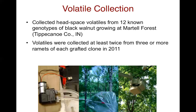To do this, we collected volatiles from 12 known genotypes of black walnut growing in a plantation at Purdue's Martell Forest. Volatiles were collected by placing the twigs, stems, and leaves of black walnut in tedlar bags — these inert bags — then drawing air through the bag using battery-powered micropumps. As the air is drawn through the bag, it draws over a molecular absorbent material that collects those volatile compounds.